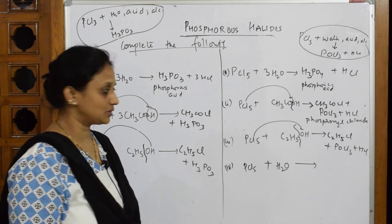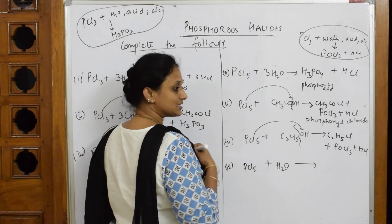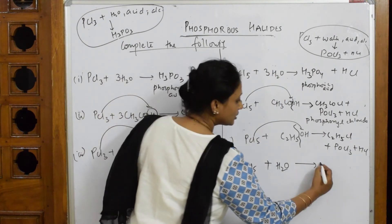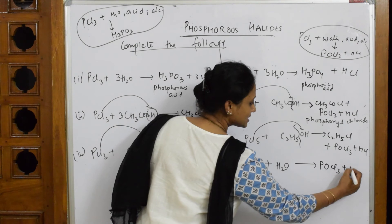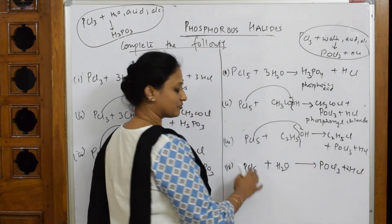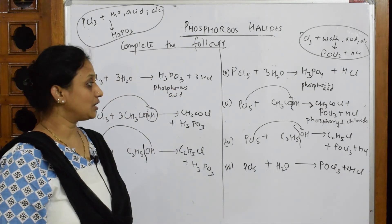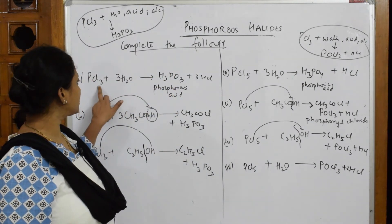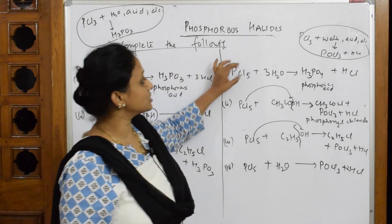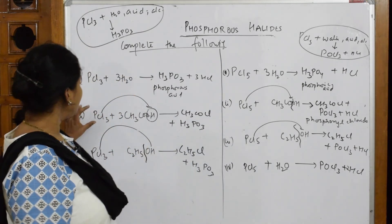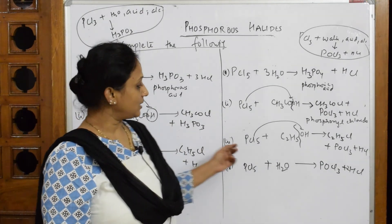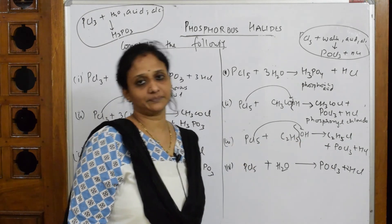For PCl₅ plus water: you get phosphoryl chloride (POCl₃) plus 2 HCl. Remember the key logic: treating PCl₃ gives phosphorous acid (H₃PO₃); treating PCl₅ gives phosphoric acid (H₃PO₄) for water reactions. And for acid or alcohol reactions, PCl₃ gives H₃PO₃ while PCl₅ gives phosphoryl chloride (POCl₃).